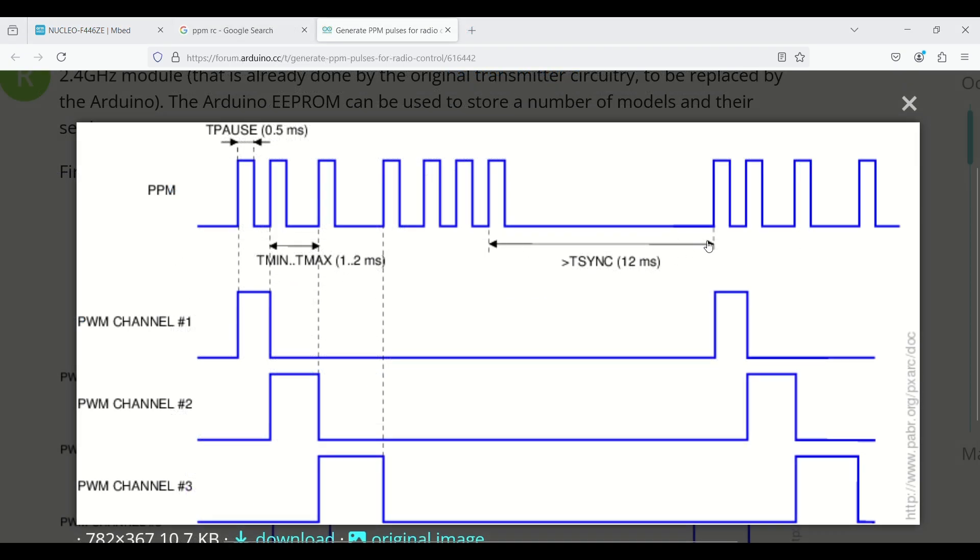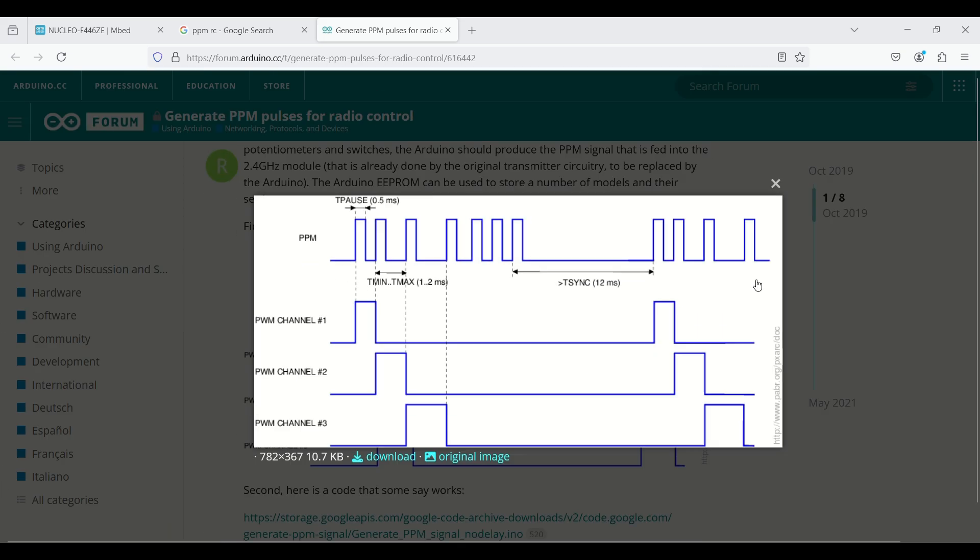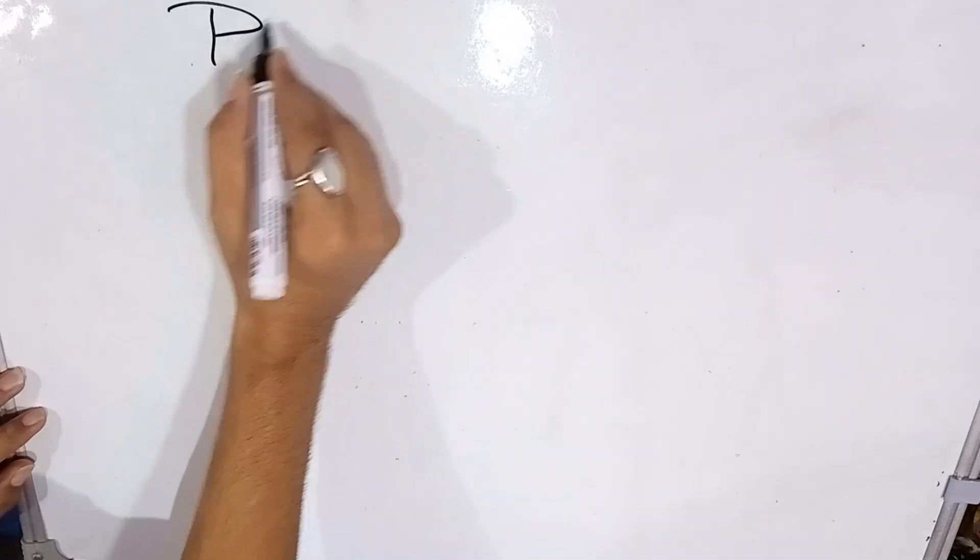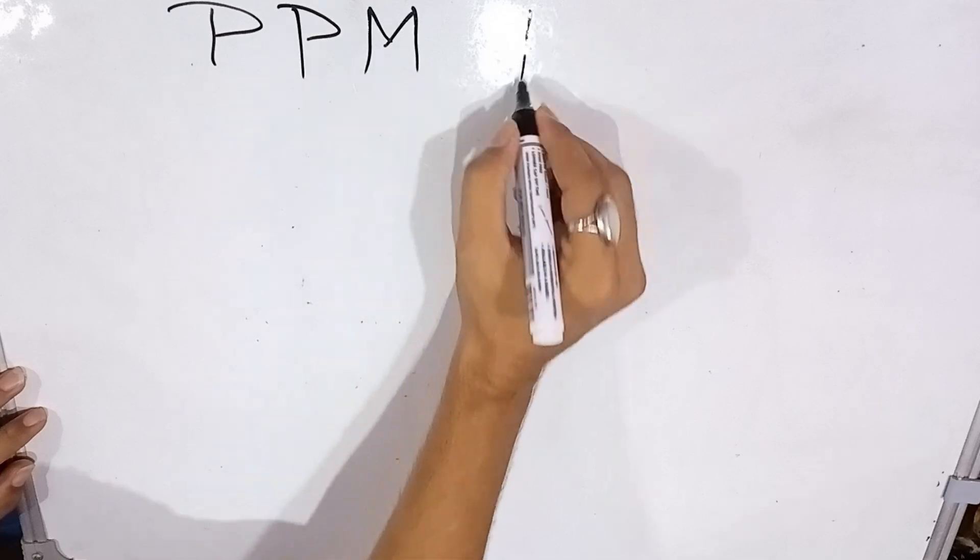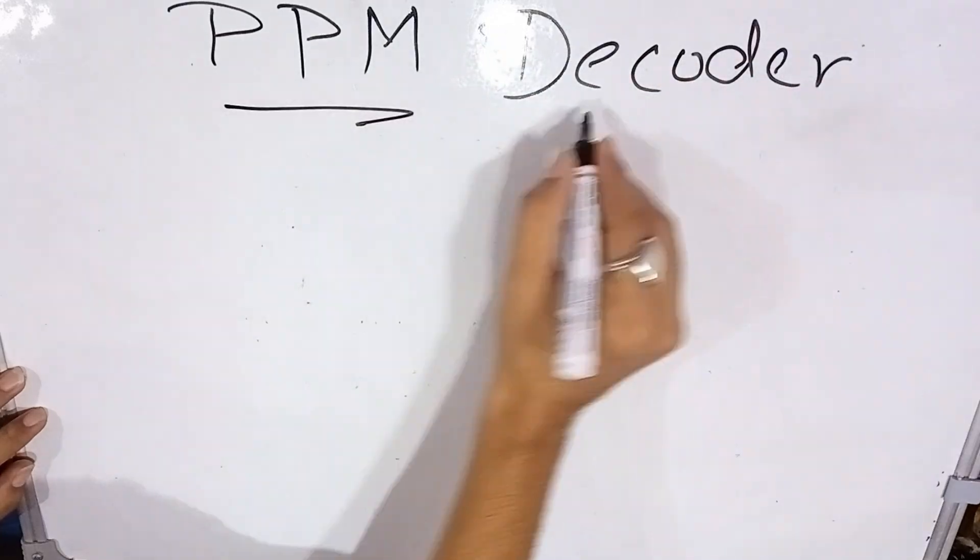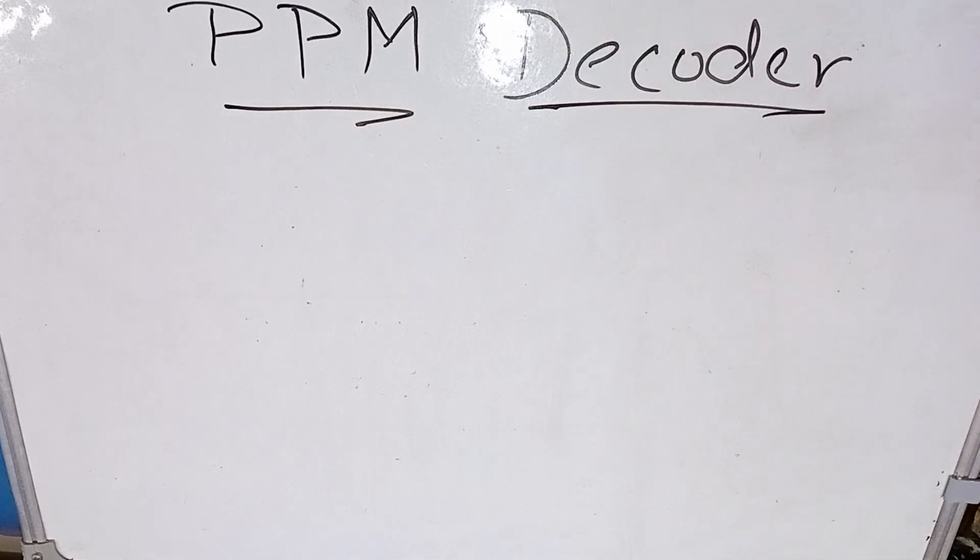What it says in summary is that you have a single data line on which you have multiple PWM data. In normal cases for PWM signals you require that many wires. Suppose I need eight PWM signals, I will have eight PWM wires. But in PPM, in a single wire you can combine those eight data together.